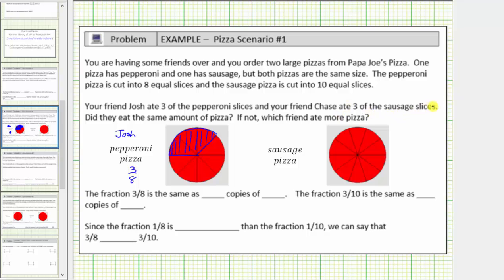Chase ate three of these sausage slices, let's assume Chase ate these three pieces. Notice Chase ate three-tenths of the pizza.